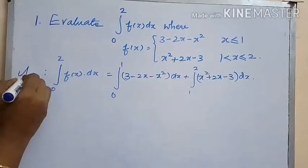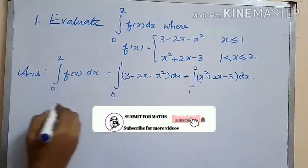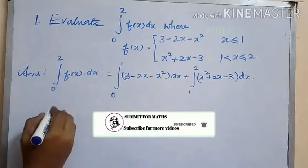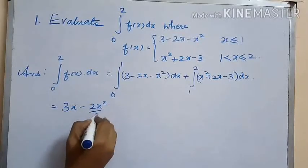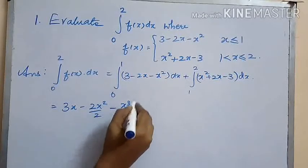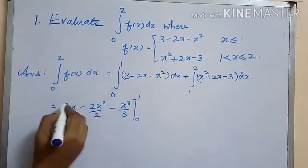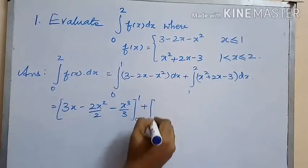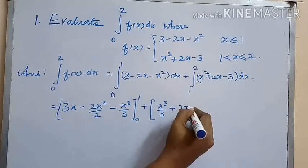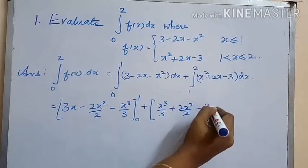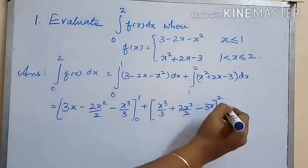For Problem 2, f(x) equals 3 − 2x − x² when x is less than or equal to 1, and x² + 2x − 3 when x lies between 1 and 2. Integrating, we get 3x − 2x²/2 − x³/3 within the limits 0 to 1, plus x³/3 + 2x²/2 − 3x within the limits 1 to 2.